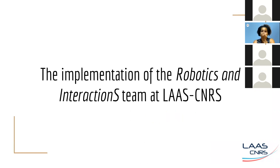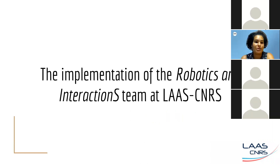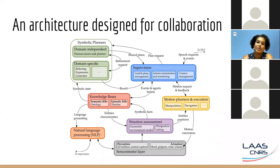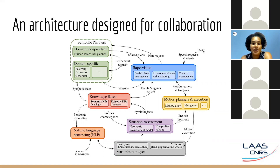Now I'm going to talk about the implementation we've done on our robot. This is an overview of the architecture. I'm going to briefly present it step by step. Then in a second phase, you will have a more detailed presentation of each component, except natural language processing, which is not our field of expertise — we just use it out of the box. The architecture takes inspiration from previous works of our thesis supervisor, Rashid Al-Ami. All the components are interacting with each other and are interdependent.